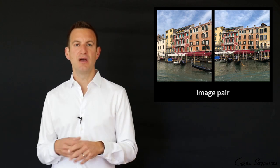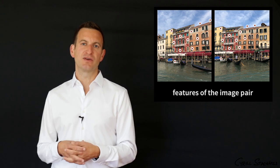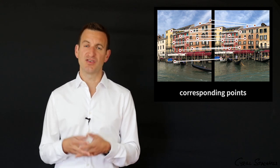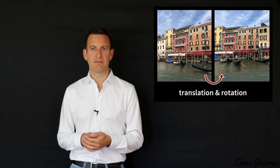So once we have such a signature for all locally distinct points in the image, we can actually take a second image, perform the operations on the second image as well, and then establish, for example, correspondences between those features, which is again important if you want to compute the relative orientation of the image pair.